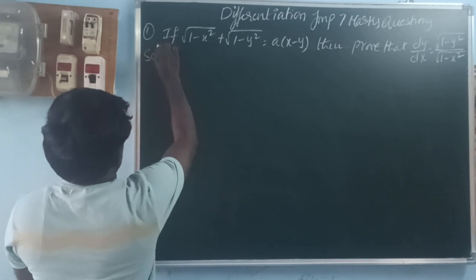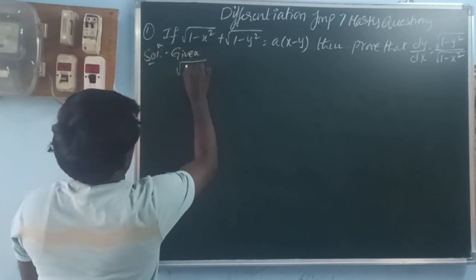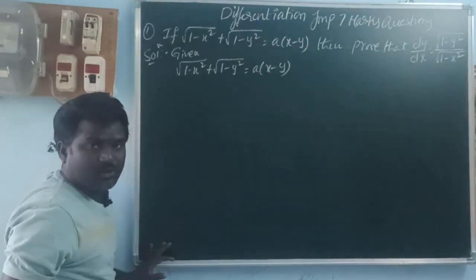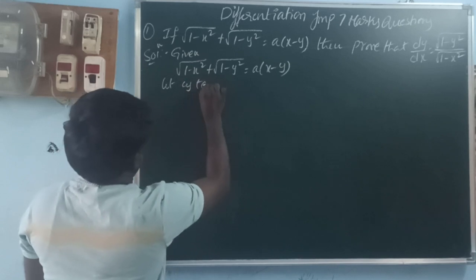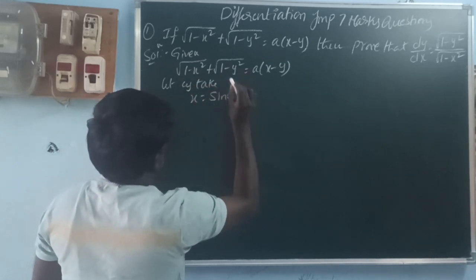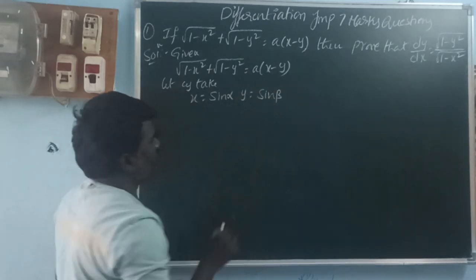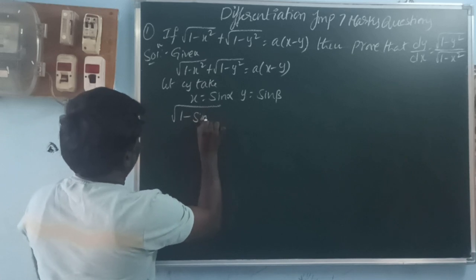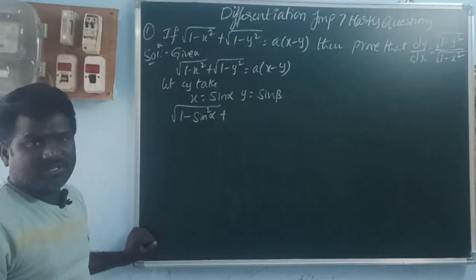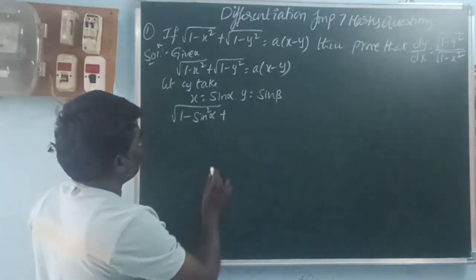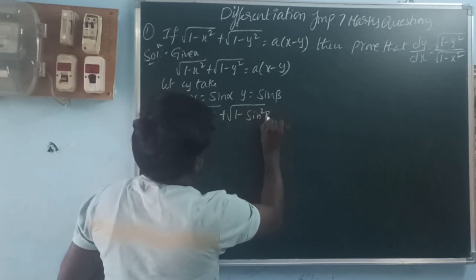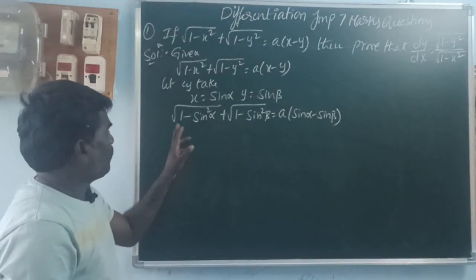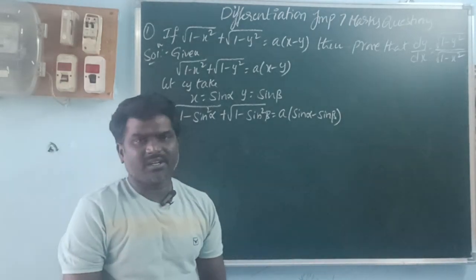Given: √(1 - x²) + √(1 - y²) = a(x - y). For this problem, let us take x = sin α and y = sin β. Substituting these two values, √(1 - sin²α) + √(1 - sin²β) = a(sin α - sin β).